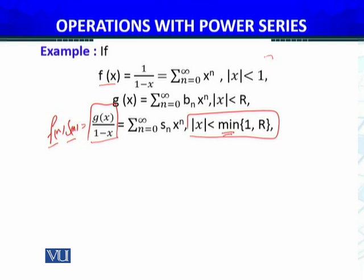g(x) has radius of convergence R, so it's the minimum of 1 and R. Now let's see what s_n equals.